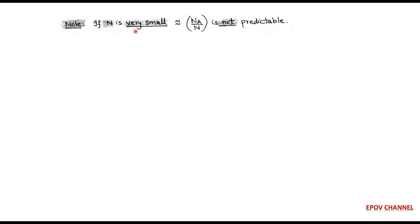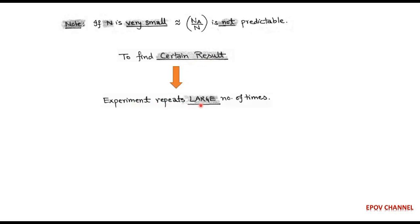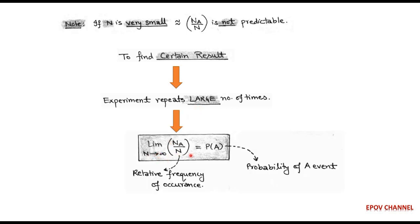When the total number of n trials is very small, the computation of relative frequency is not possible and the result becomes uncertain. In order to determine precise relative frequency, the experiment must be repeated a very large number of times, meaning n tends to infinity. So the limit of Na/n as n tends to infinity is nothing but the probability of event A (head).